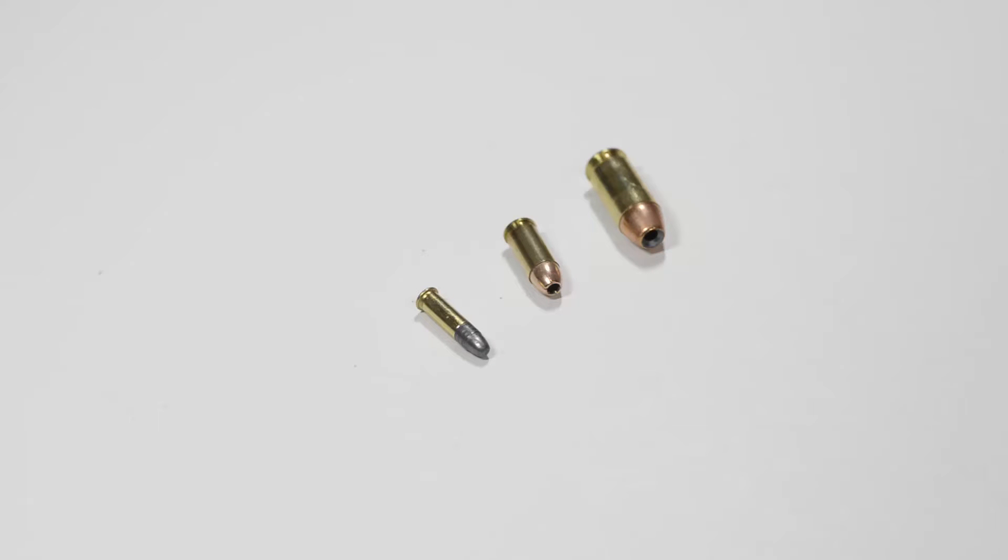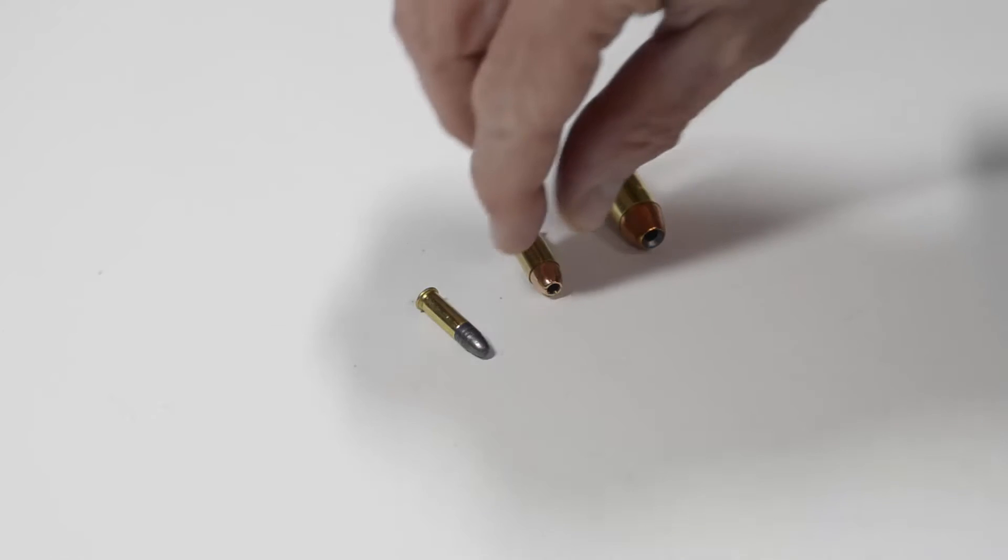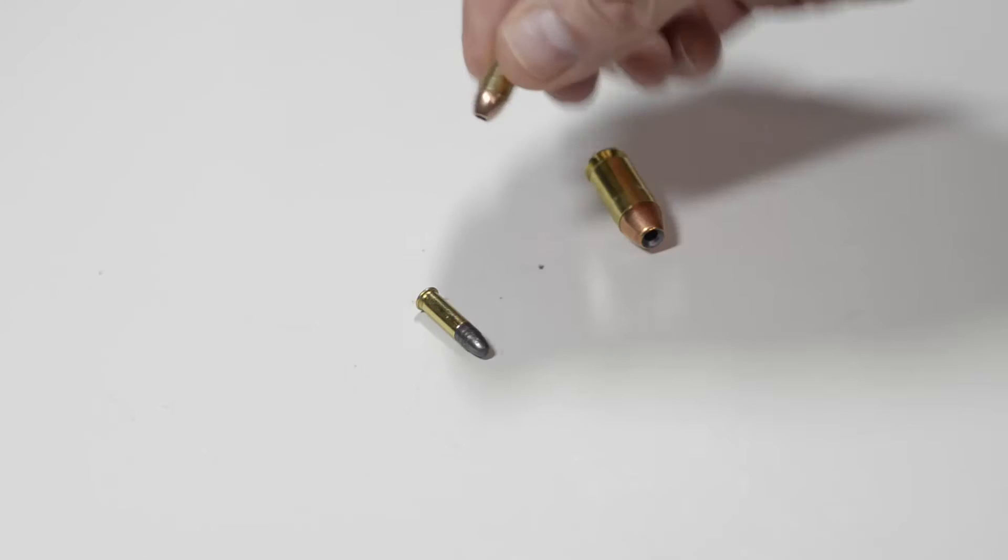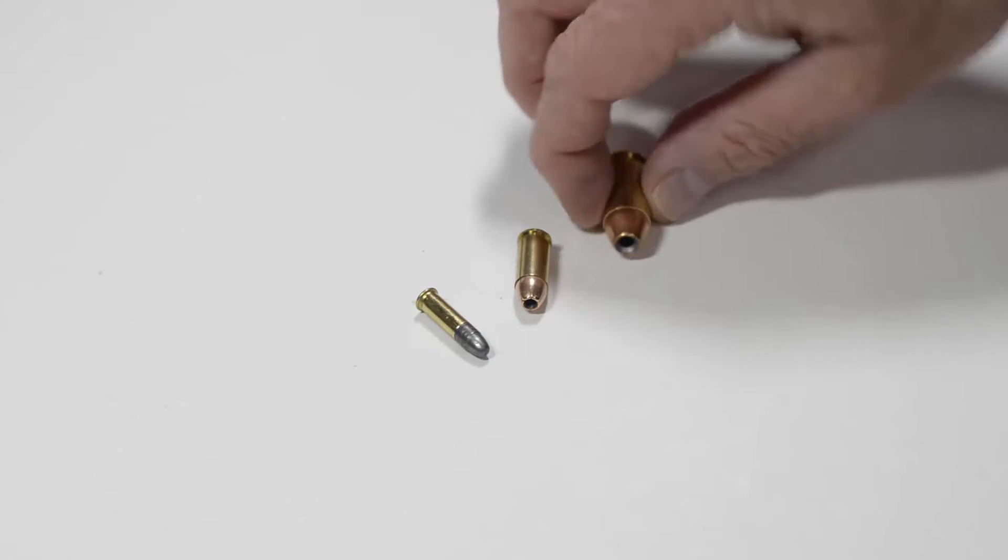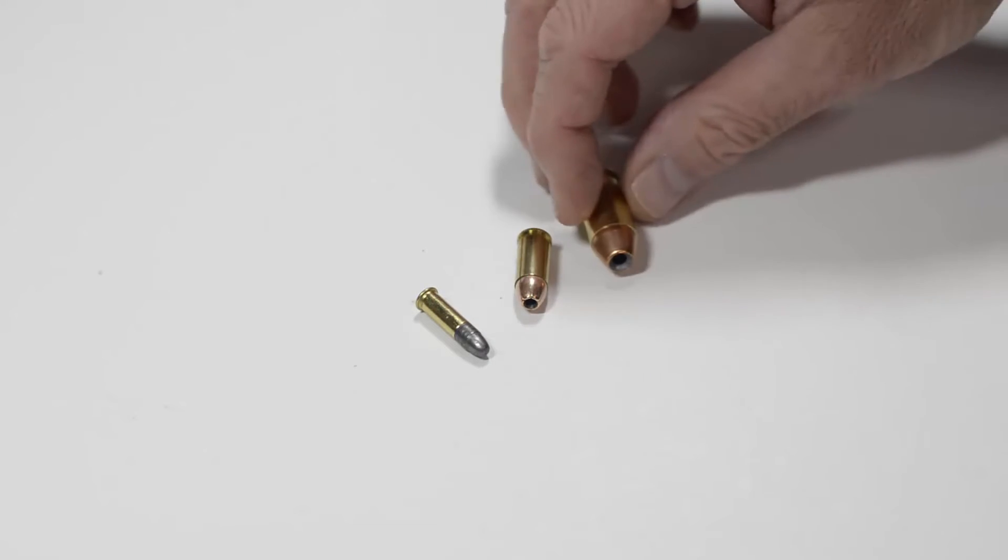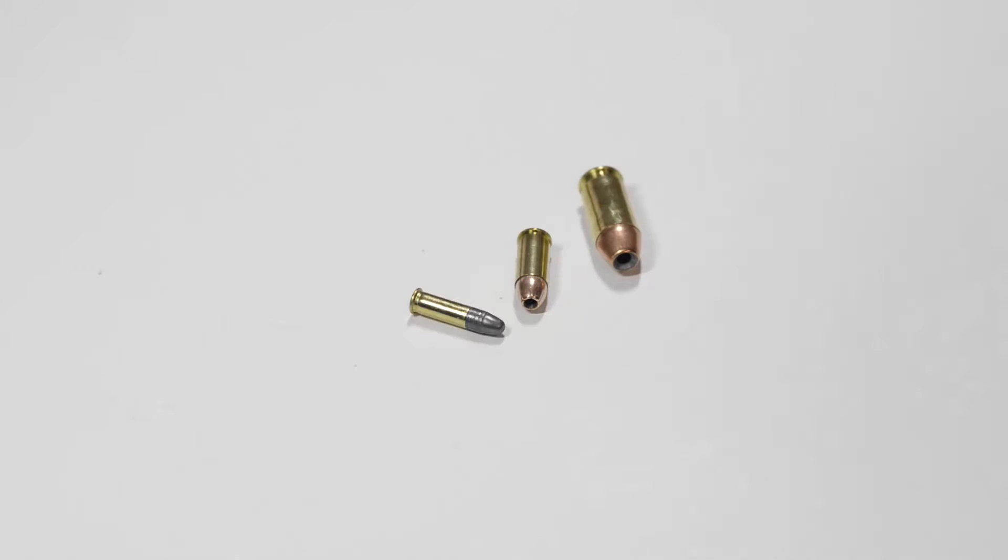I am setting up my Dillon 550B to reload .32 auto. This is a factory made .32 auto, and for comparison purposes I have a .45 ACP and a .22 long rifle.